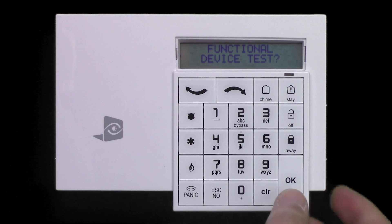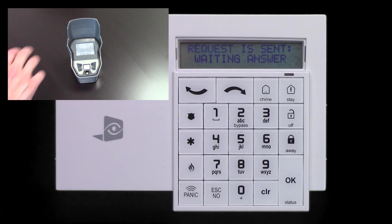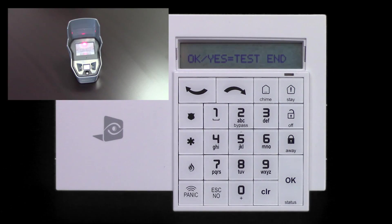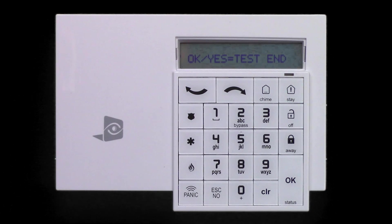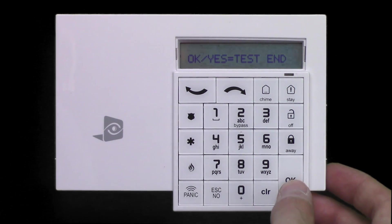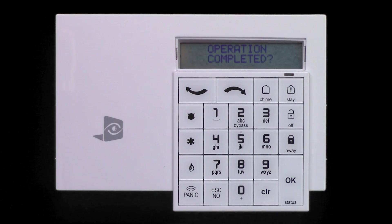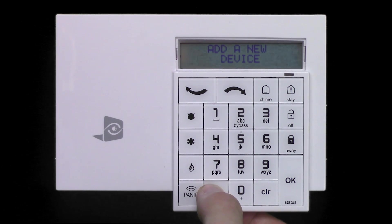On the keypad, press OK to run the functional test. Wave your hand in front of the device. The LED will illuminate when there is a detection. Press OK to end the test. Press OK to acknowledge completion. Hold the Escape No button to return to the main menu.